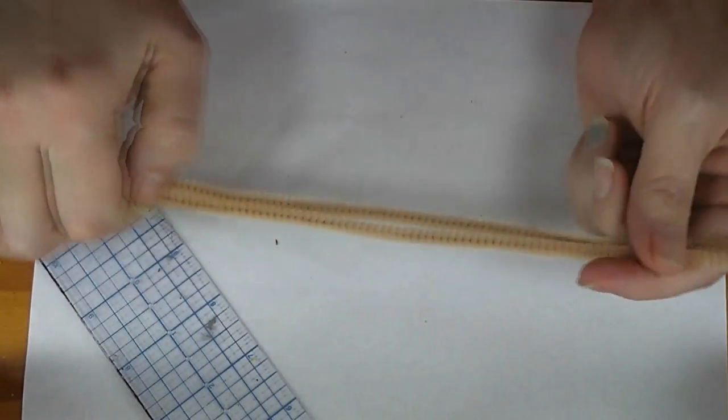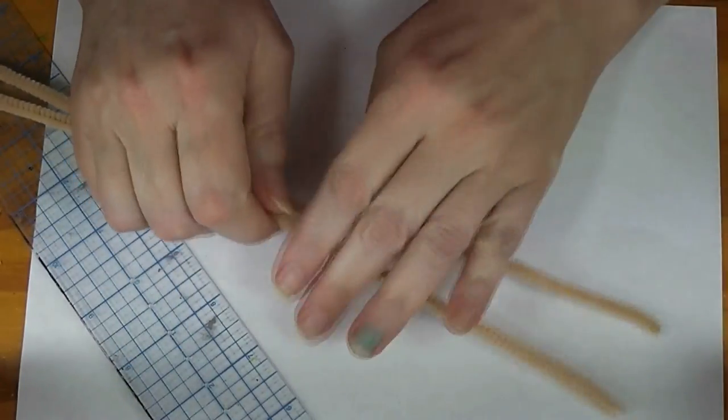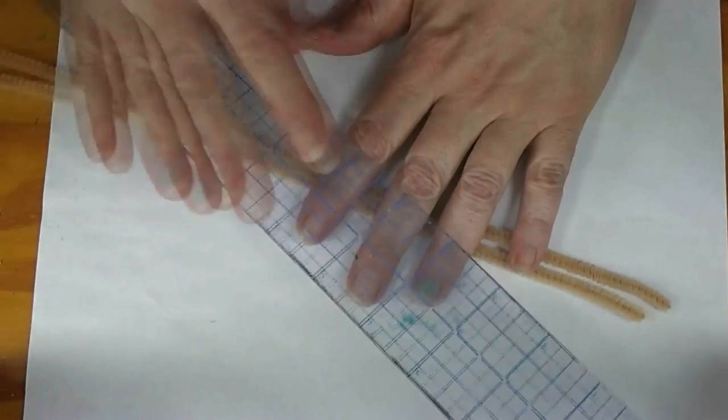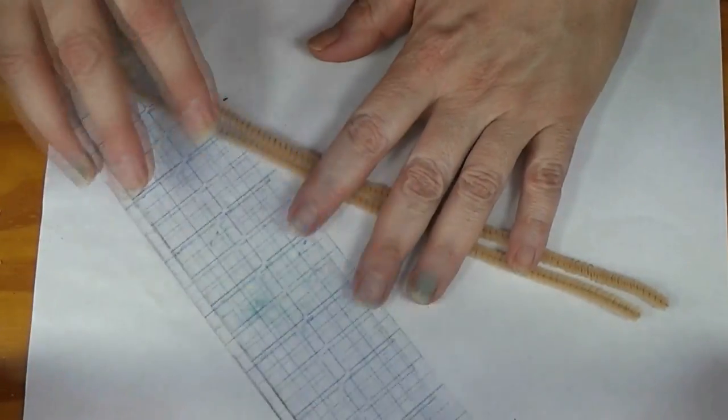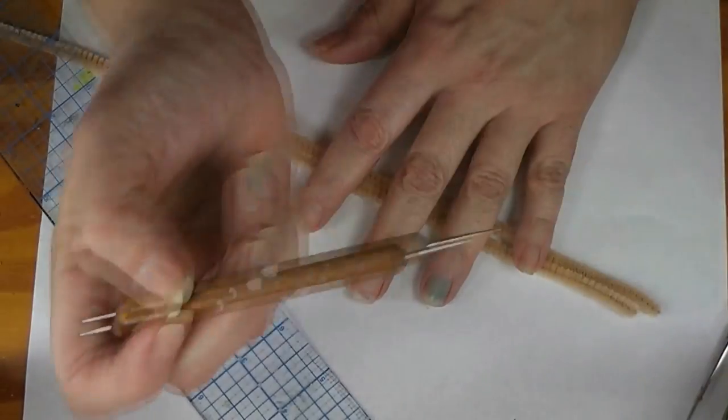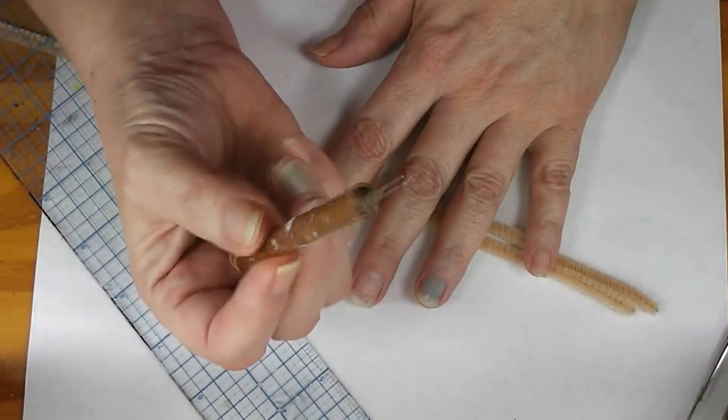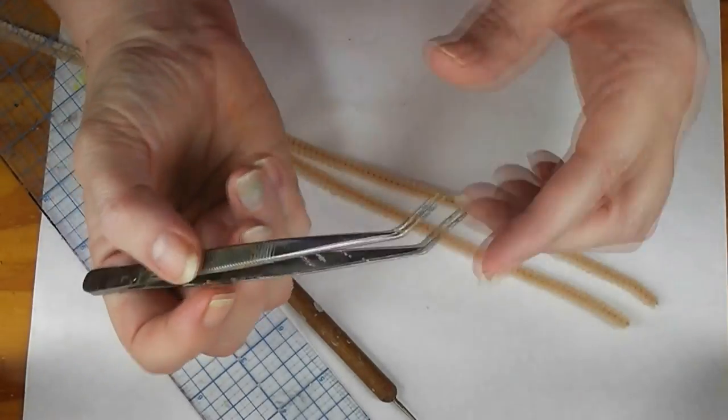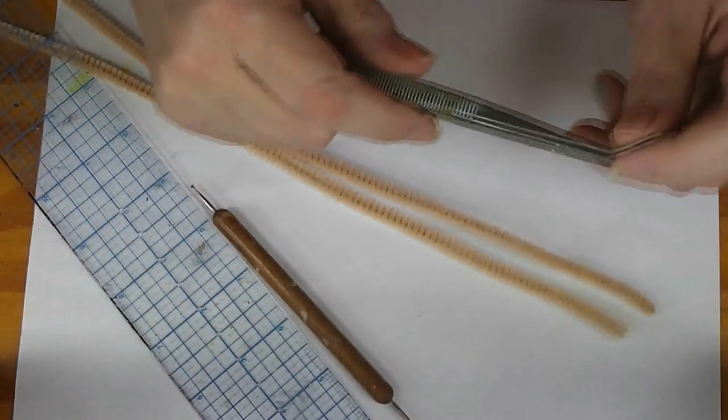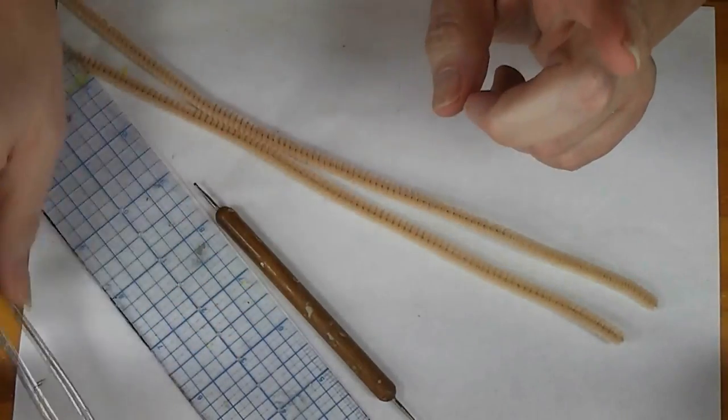So to make these, you need two chenille stems, any color. I wanted to find some fairly light ones to do the video with. You'll need a measure of some kind—I got this little clear ruler. I find a dotting tool is really handy, you'll see that in a minute.